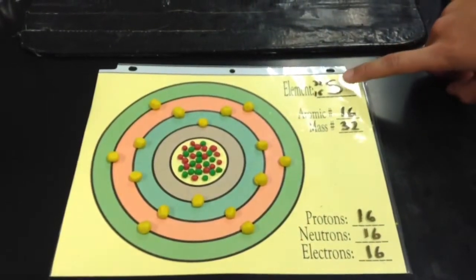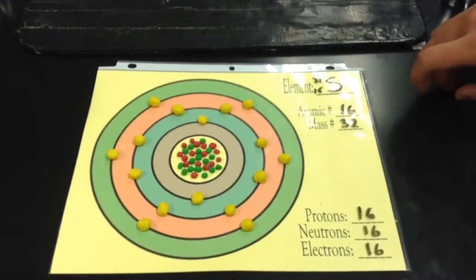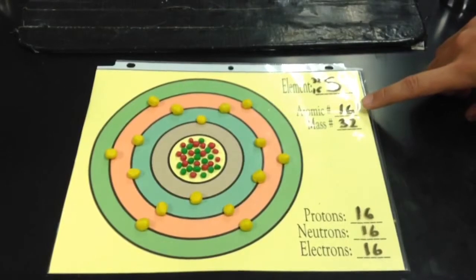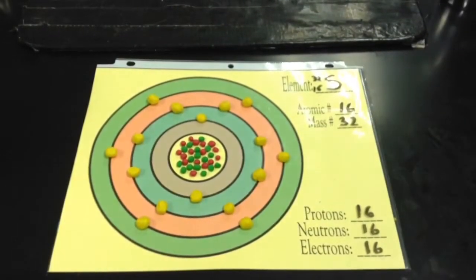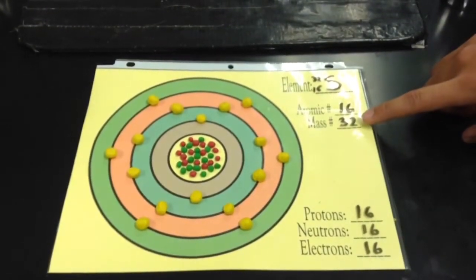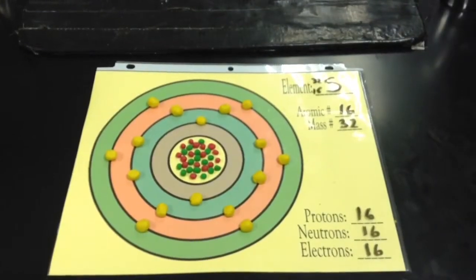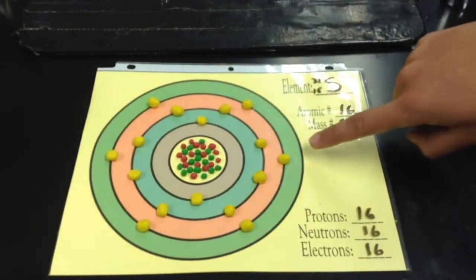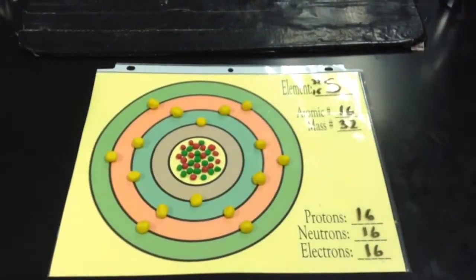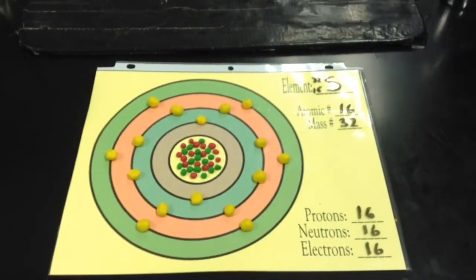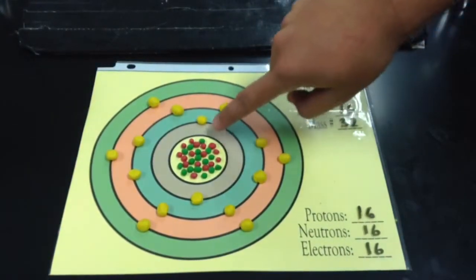This is sulfur-32, the most common of the isotopes of sulfur, appearing with an abundance of 95.02%. It contains 16 protons, 16 neutrons, and 16 electrons, giving it an approximate mass of 32 atomic mass units.